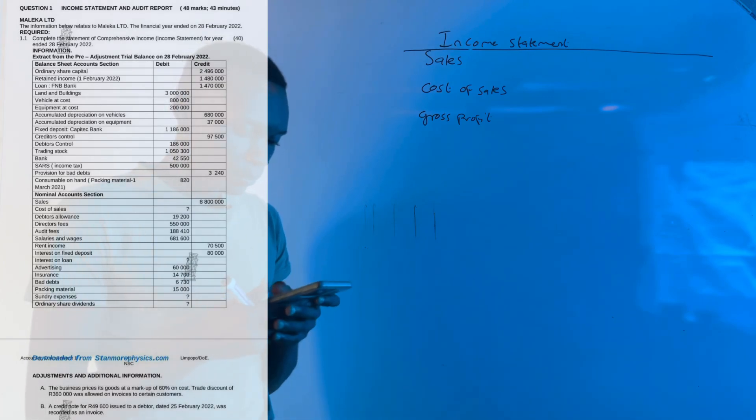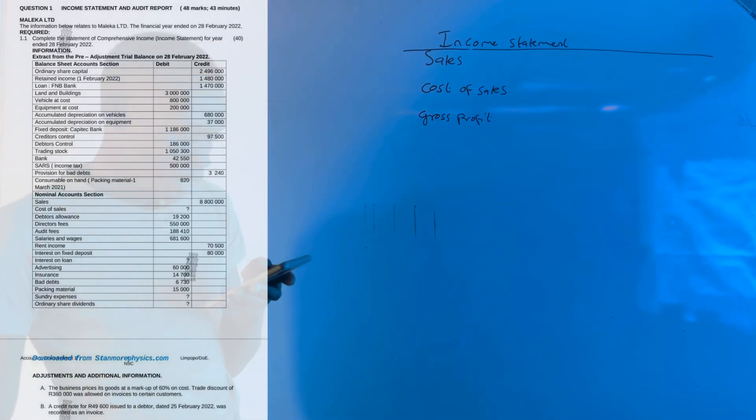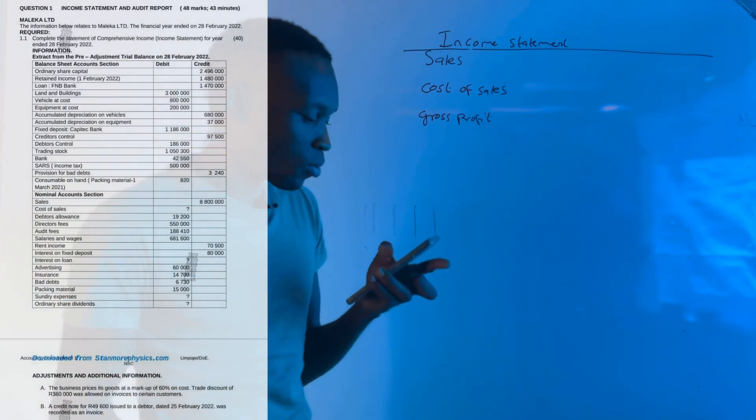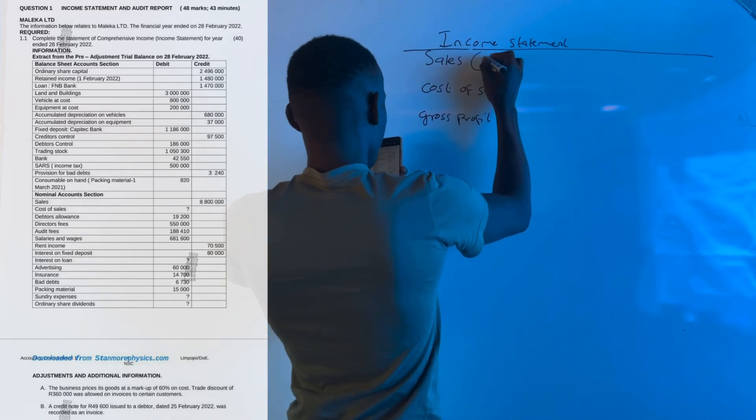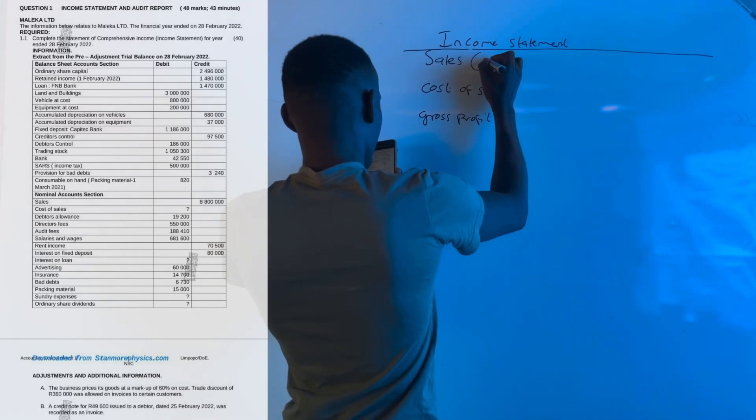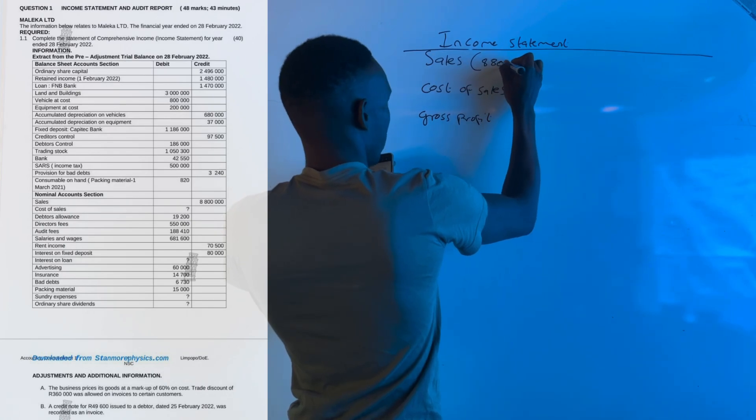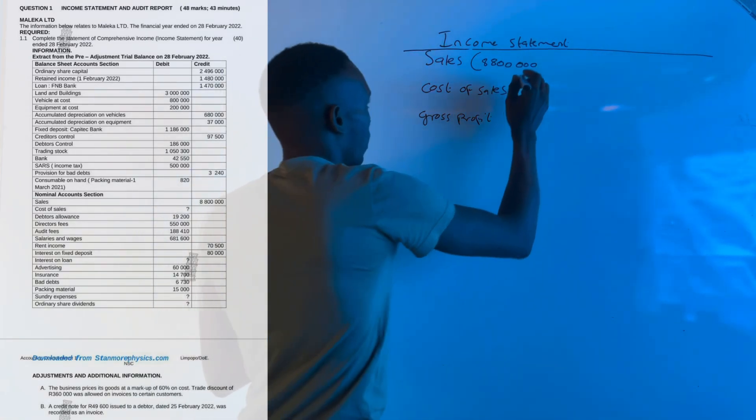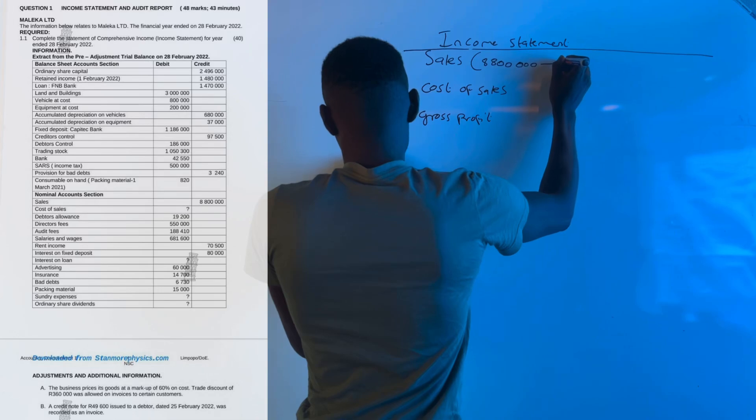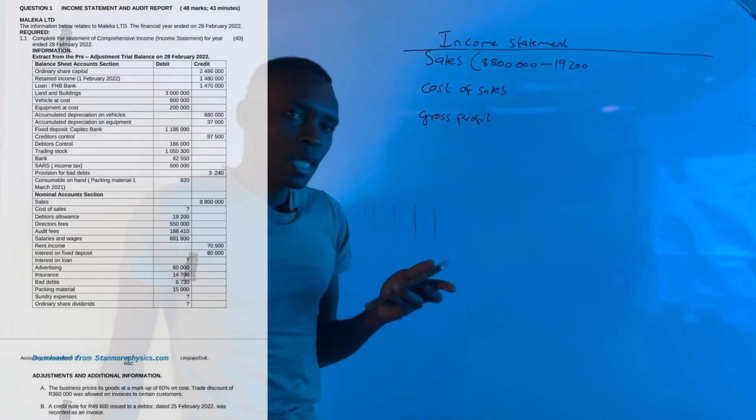We've been given a sales amount of 8 million 800 thousand. Then they also give us a data allowance which we're going to subtract. Data allowance is the return from customers - we have to subtract them because they're no longer part of sales.